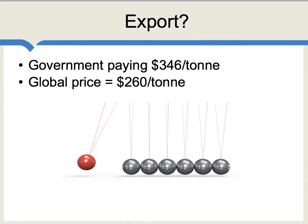You might think the Indian government could export that wheat, but circa the summer of 2012, the government was paying typically $346 for a ton of wheat, while the global price for comparable kinds of wheat was about $260 a ton — so it appears the government is overpaying.